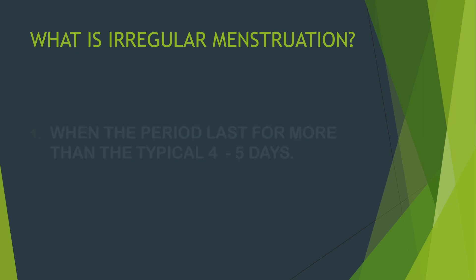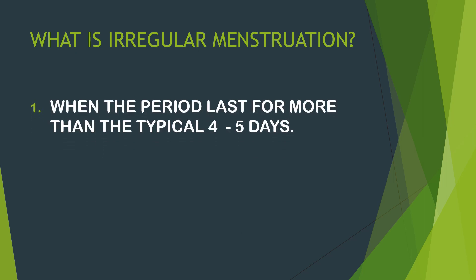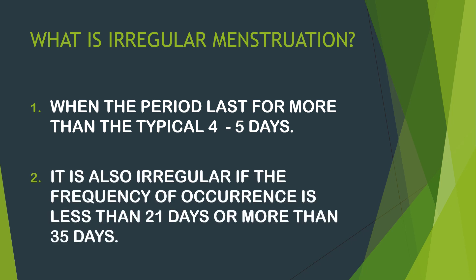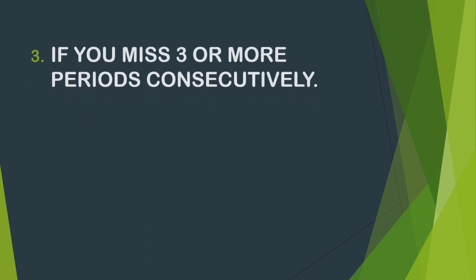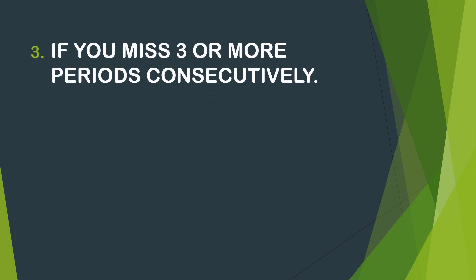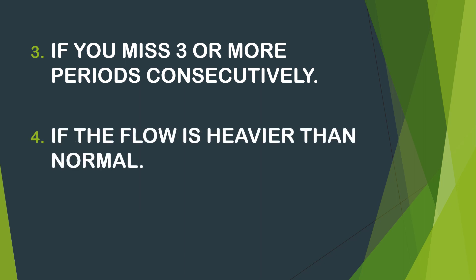What is irregular menstruation? When a woman's period lasts for more than the typical four to five days, it can be considered irregular. It is also irregular if the frequency of occurrence is less than 21 days or more than 35 days. If a woman misses a period for three or more consecutive times, that is irregular menstruation. If the flow is heavier than normal, it is also irregular.